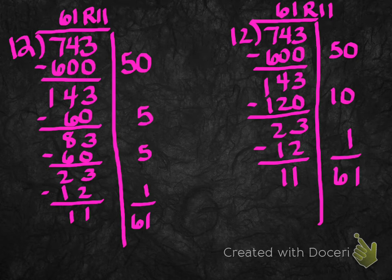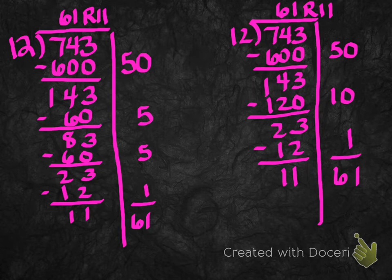And here are two more examples where I have 743 divided by 12. Same problem on both sides there. You can see that I started with the number 50 in both problems, but then I changed my numbers after that. So the first problem, I started with 50, did my multiplication, did my subtraction. I had 143 left. Then I put a 5 over here, multiplied 5 times 12 because I knew that was 60. Subtract, I got 83 left. I did another 5. 5 times 12 is 60 once again. Subtracted, I got 23.